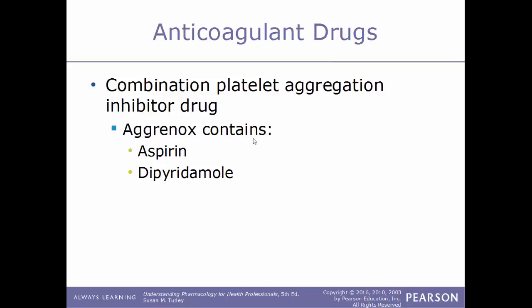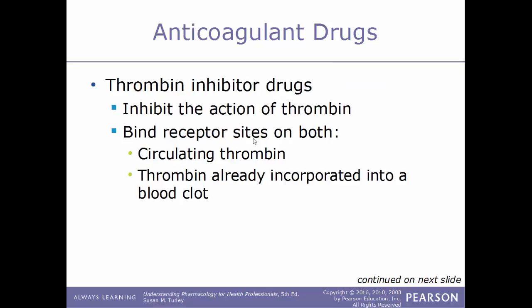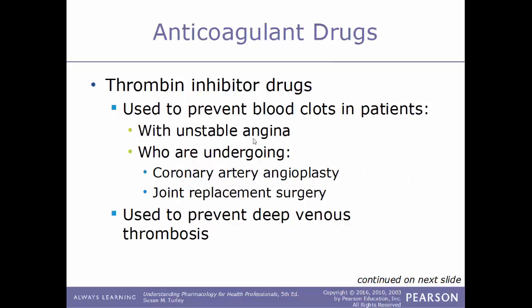It is common to see anticoagulant drugs sold as combination drugs. An example is Aggrenox, a combination of both aspirin and dipyridamole. Another type of anticoagulant drugs are thrombin inhibitors. As the name implies, they inhibit the action of thrombin by binding to receptor sites of both circulating thrombin in the blood and thrombin already incorporated into the blood clot. These are used to prevent blood clots in patients with unstable angina, those undergoing coronary artery angioplasty, joint replacement surgery, or to prevent deep venous thrombosis.